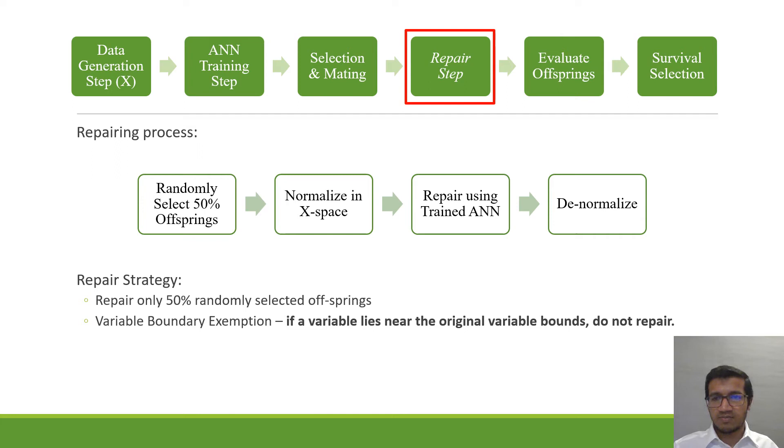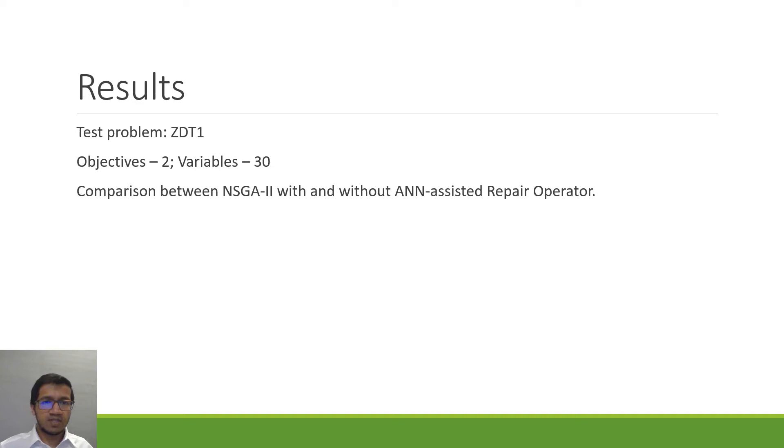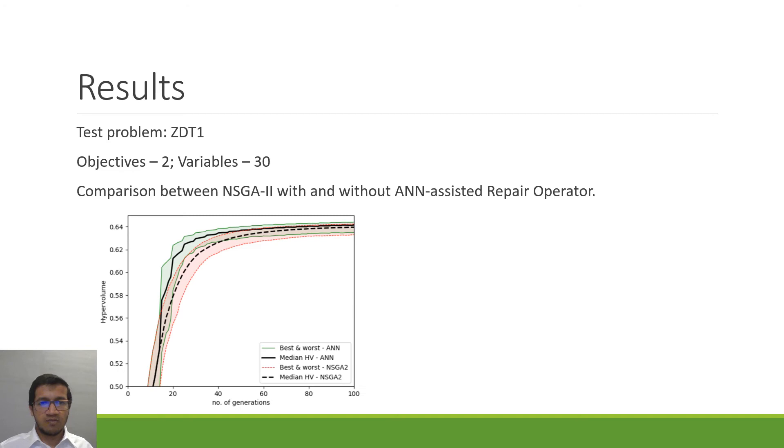So as preliminary results we show our results on the problem ZDT1 which is a two objective and 30 variable problem, and we have comparison of NSGA-II with and without the NN assisted repair operator. So here we can see the black solid and black dotted lines show the hypervolume, the median hypervolume from 31 independent runs.